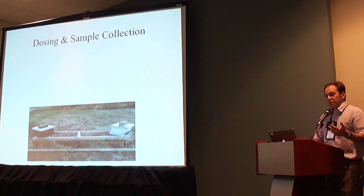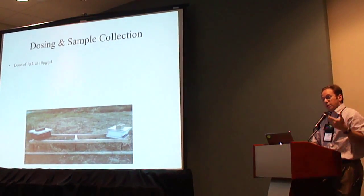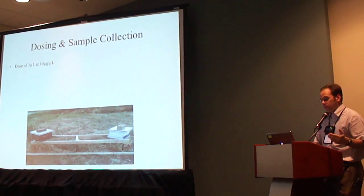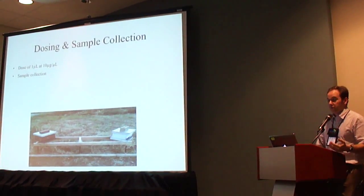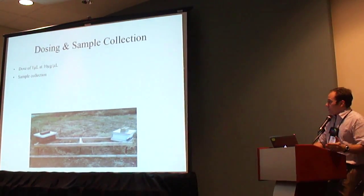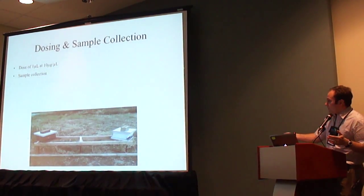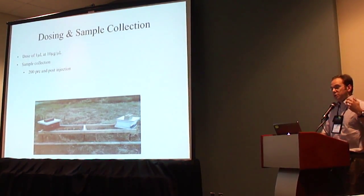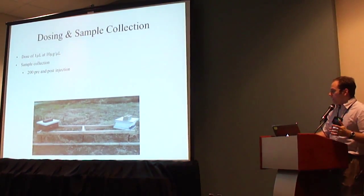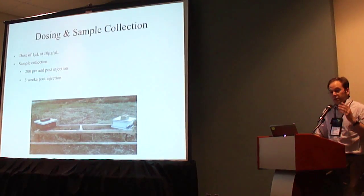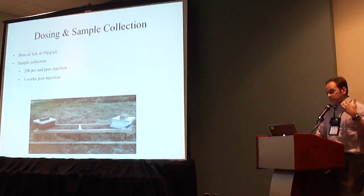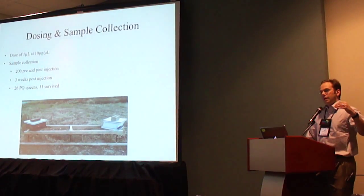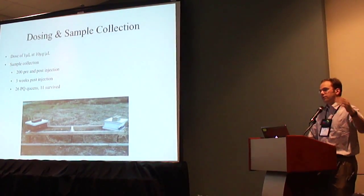For my primary sample gathering setup, the dose administered to the queens was one microliter at ten micrograms per microliter of paraquat, which seemed to be a good dose to stress them without killing them overnight. For sample collection, I set up nuclear hives, collected 200 brood from the queen pre-injection, injected the queen with paraquat, waited three weeks, then collected another 200 brood as my sample set. Out of the 26 queens I injected, only 11 survived the three-week waiting period post-injection.